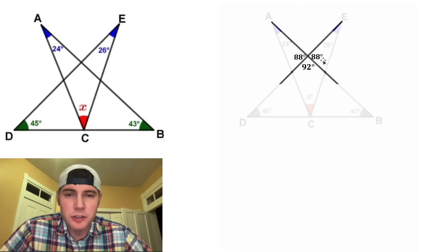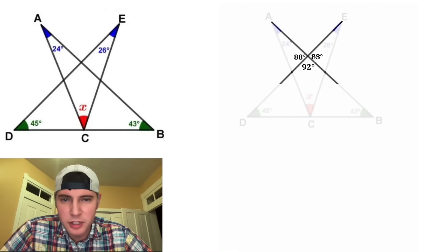And then this angle right here is also 88. You can either think of it as a linear pair with the 92, or you can think of it as vertical angles with this 88.